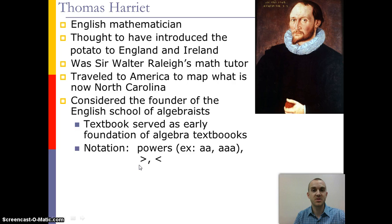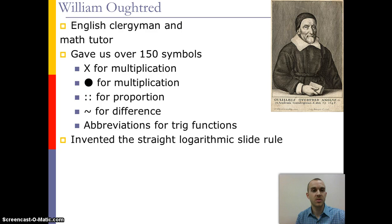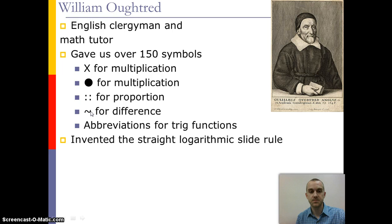William Oughtred was an Englishman who was a clergyman and a math tutor, and he gave us about 150 of the mathematical symbols we use in algebra. For instance, using an x or a dot for multiplication, four square dots for proportion, the tilde for difference, and many of the abbreviations for trigonometric functions.